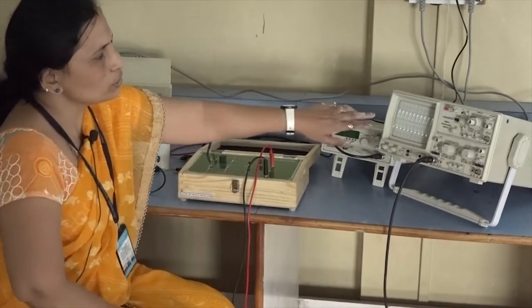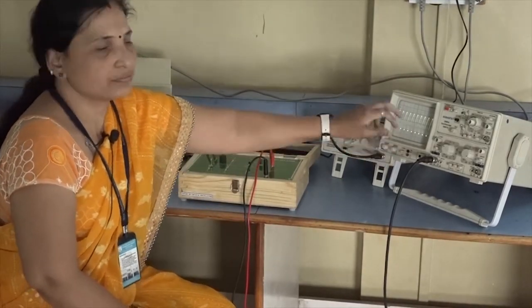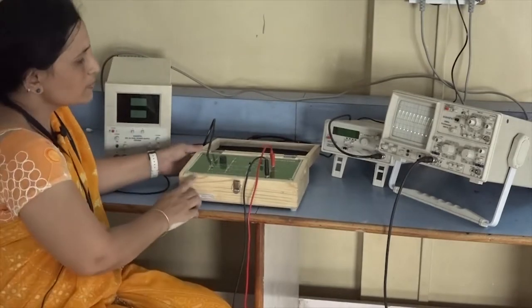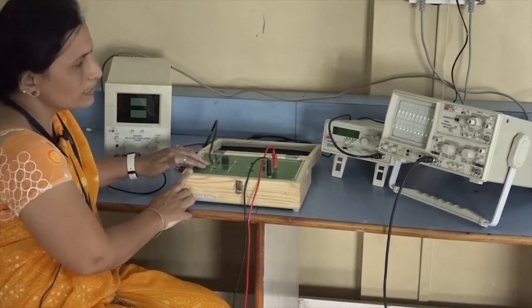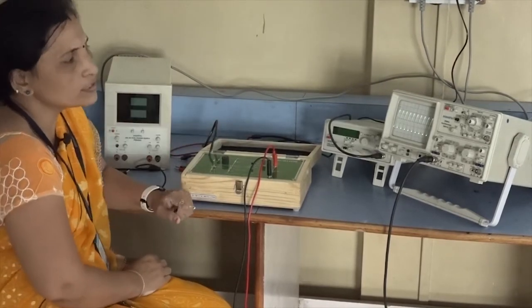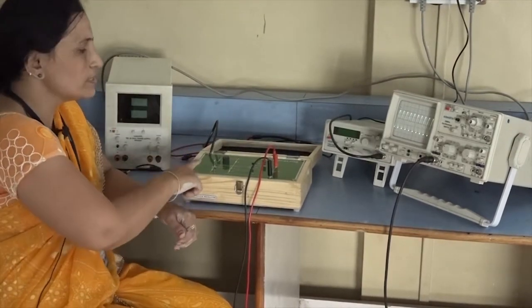Observe on the CRO you will get the sine wave. We are giving only the DC voltage not applying any AC voltage and at the output side you are getting oscillations, so it is an oscillator.